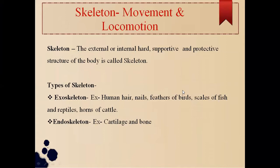On the basis of location, there are two types of skeleton: exoskeleton and endoskeleton. 'Exo' means external, so the external hard supportive and protective structure of the body is called exoskeleton. Examples include human hair, feathers of birds, scales of fish and reptiles, and horns of cattle.